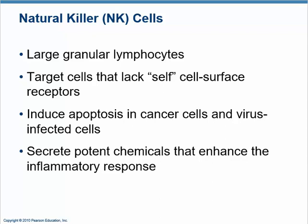Phagocytes only work in the interstitial space — they move in interstitial fluid and eat anything there. But some pathogens go intracellularly, into cells where they're out of reach of phagocytes. The way to get them is to kill the cell they're hiding in. That's the job of natural killer cells — non-specific lymphocytes that target any cell that has something wrong with it, whether it's infected with a virus or is a cancer cell.